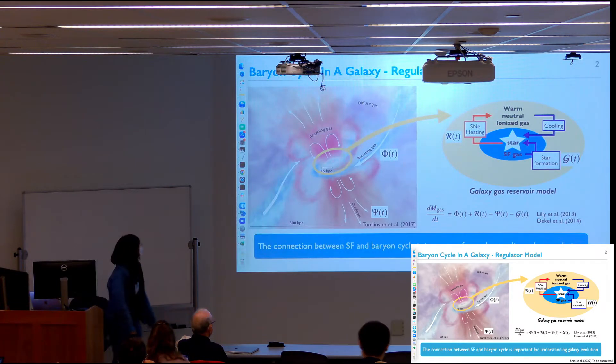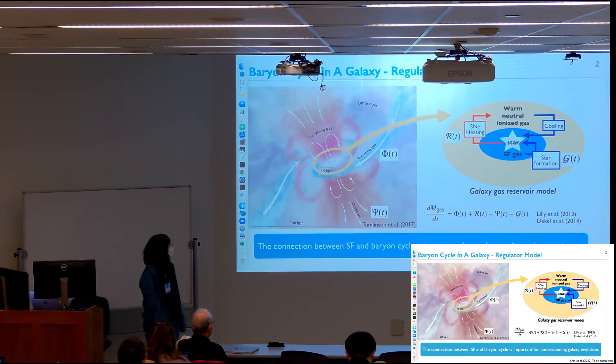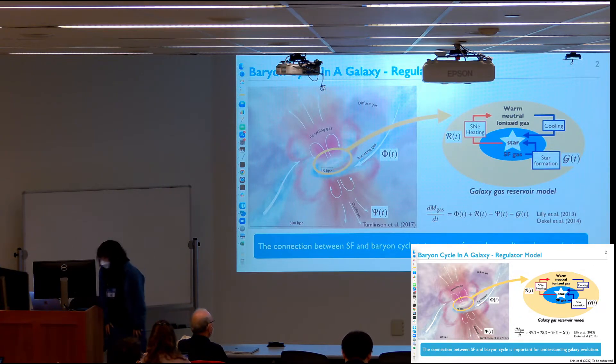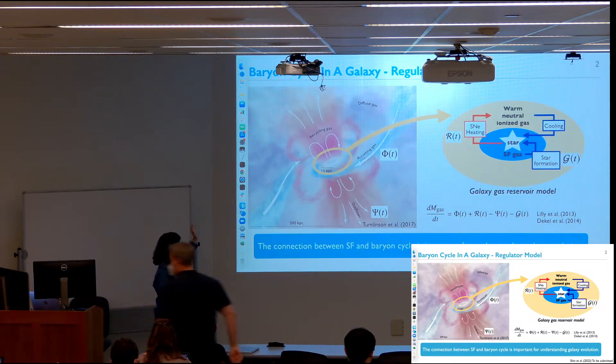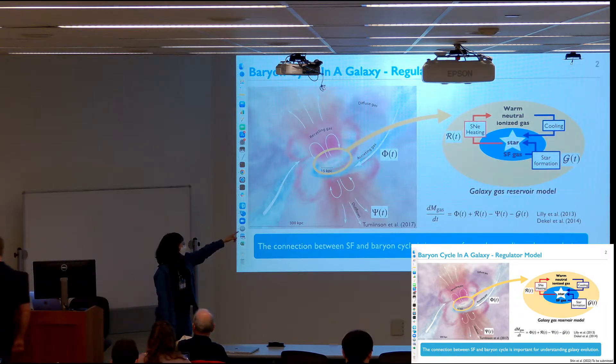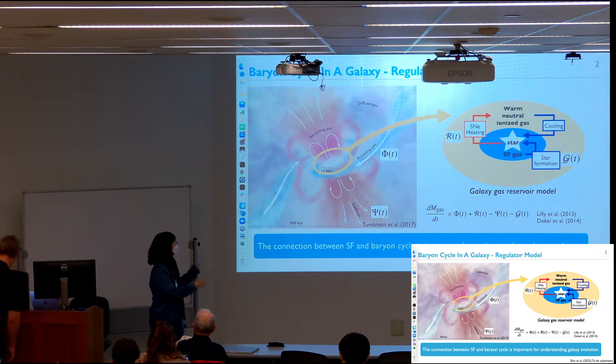I will start with these figures because I'm Korean and maybe you might know Koreans are really sensitive to trends and I will follow the trends. This figure explains the Baryon Cycle in galaxies, in and out of the galaxies. This part explains the galaxy gas cycle in a galaxy.